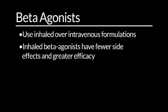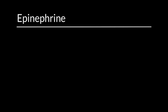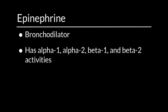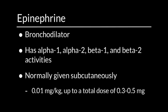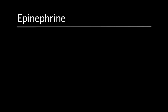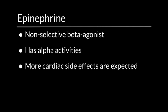The recommendation is to stay away from drugs like isoproterenol, which have both beta-1 and beta-2 effects, due to increased risk of cardiac toxicity. Epinephrine can be used in an asthma attack — it is both a vasoconstrictor and a bronchodilator, with alpha-1, alpha-2, beta-1, and beta-2 activity. When given in an asthma attack, it is normally given subcutaneously at a dose of 0.01 mg per kg, up to a total dose of 0.3 to 0.5 mg. As a non-selective beta agonist with alpha activity, more cardiac side effects are expected with epinephrine.